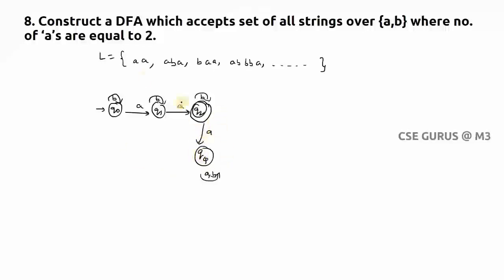Now if the question is asked as number of A's are even — irrespective of the number of B's — the construction changes. It is asked that the number of A's are even, so now we approach it differently.